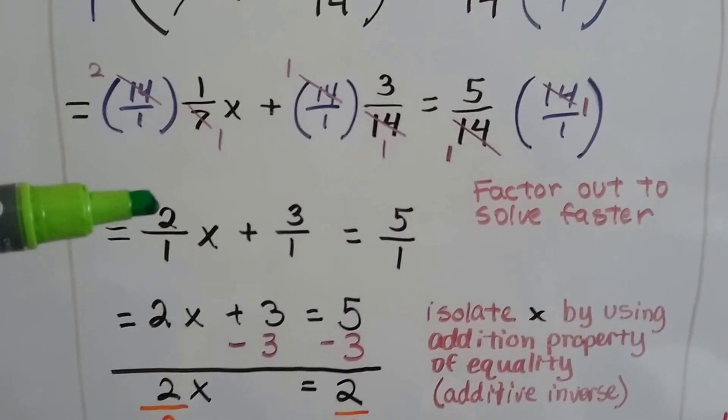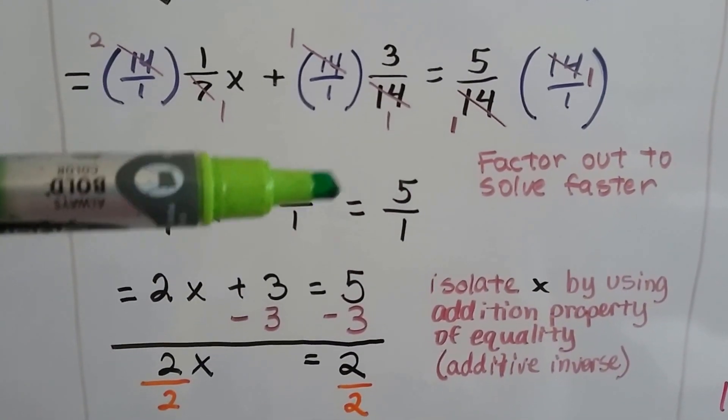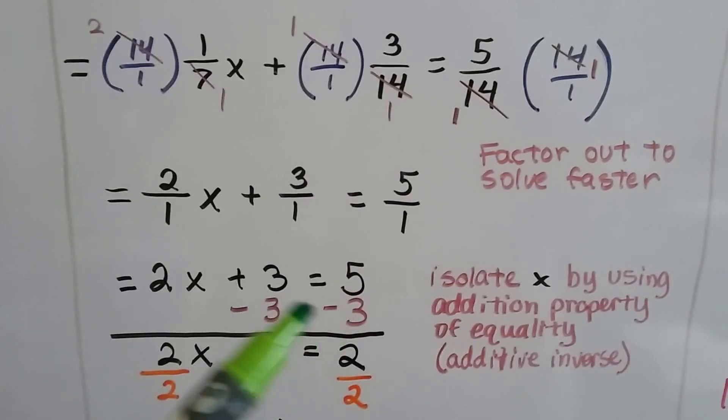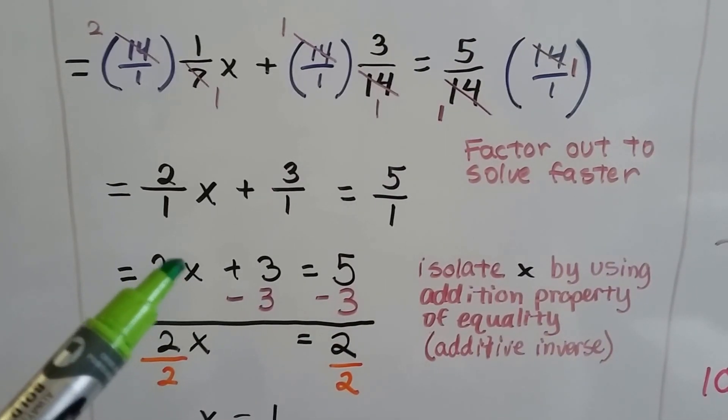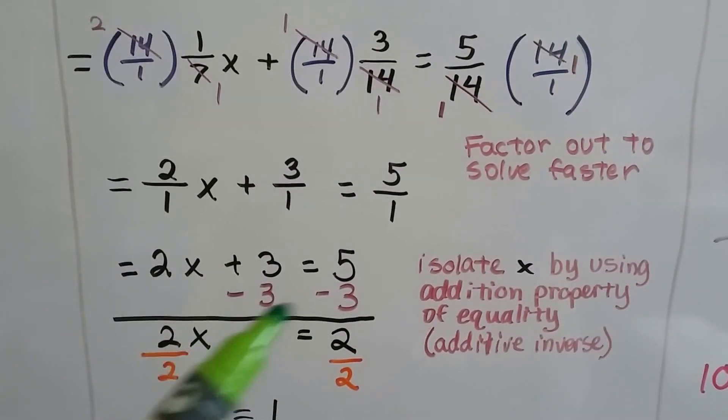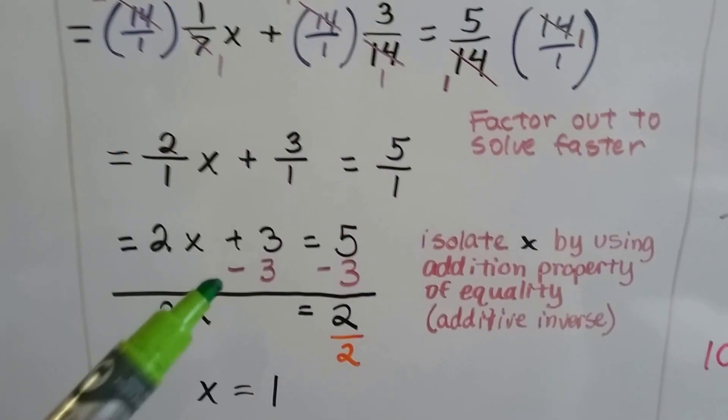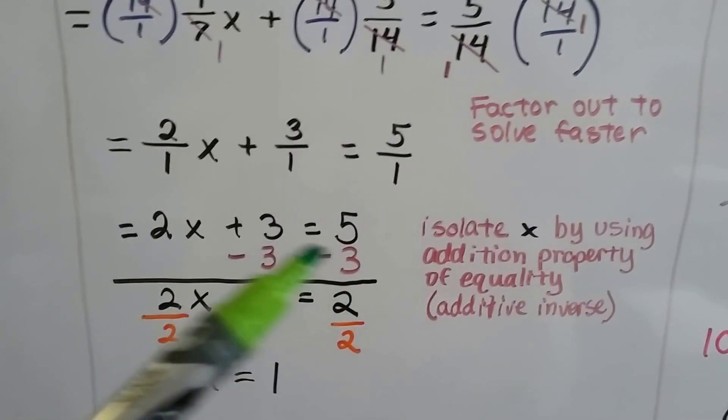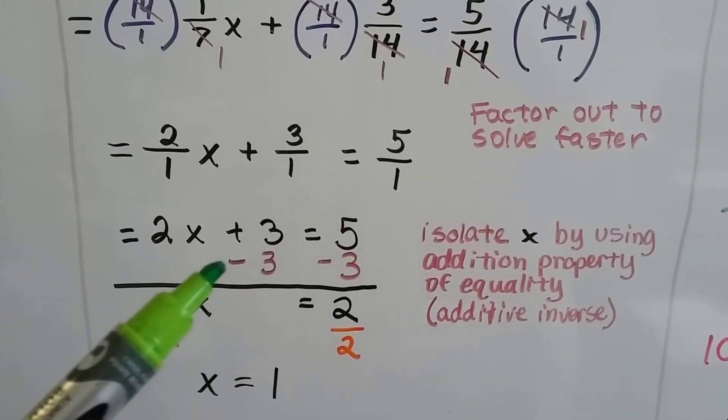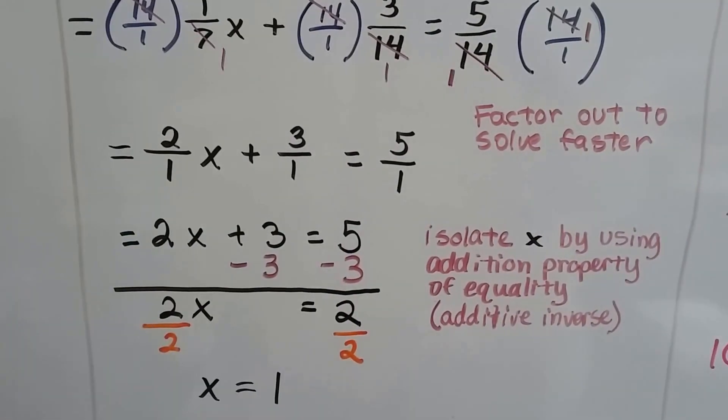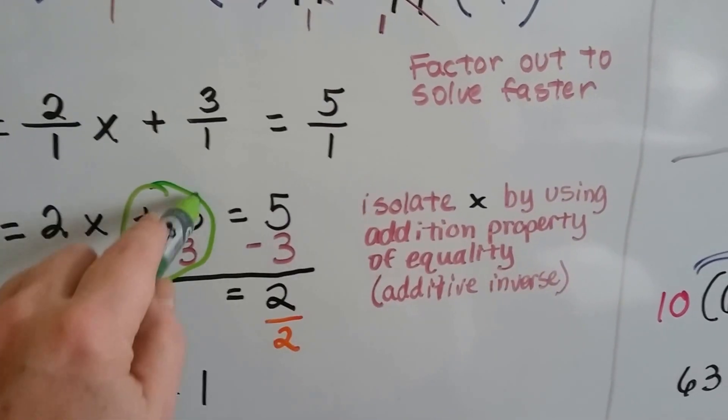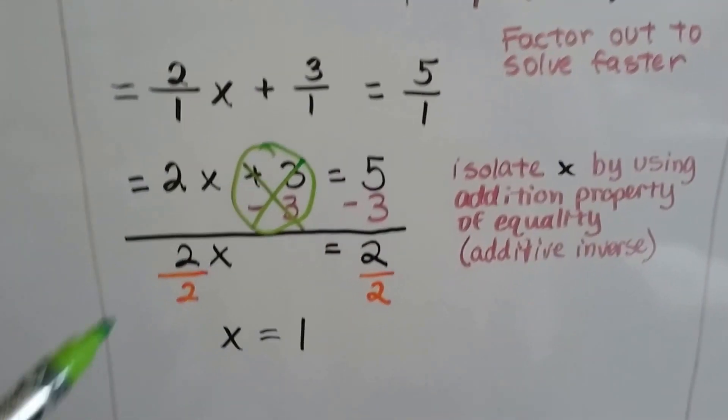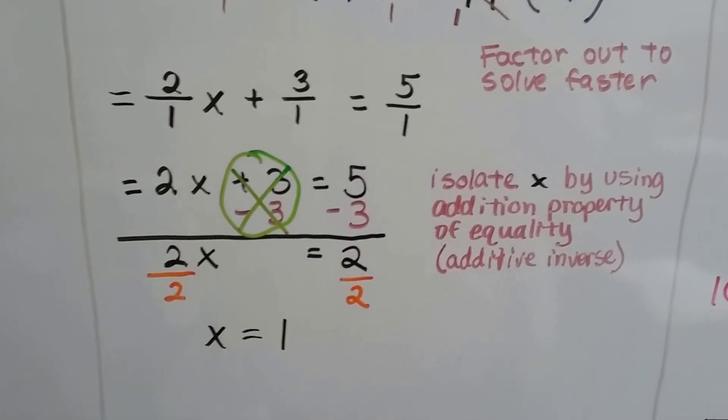So now we can see we've got 2x plus 3 equals 5. Just subtract that 3 from each side to isolate this x. We need to start getting rid of the things on this side of the equation. Using the addition property of equality, we can add or subtract the same thing from each side and keep the equation balanced. That creates a zero pair here, plus 3 minus 3. That eliminates it. So now we've got 2x equals 2.